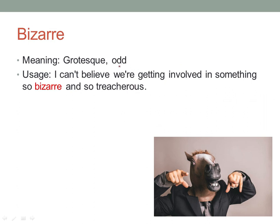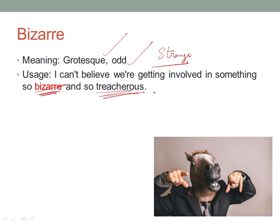The next word is 'bizarre'. Bizarre means odd or grotesque — in simple terms, something very strange. For example: 'I can't believe we are getting involved in something so bizarre and treacherous.' Treacherous is another word meaning a cruel act or an act of cruelty. If you look at the picture — a horse head on a man — that is bizarre, that is strange.